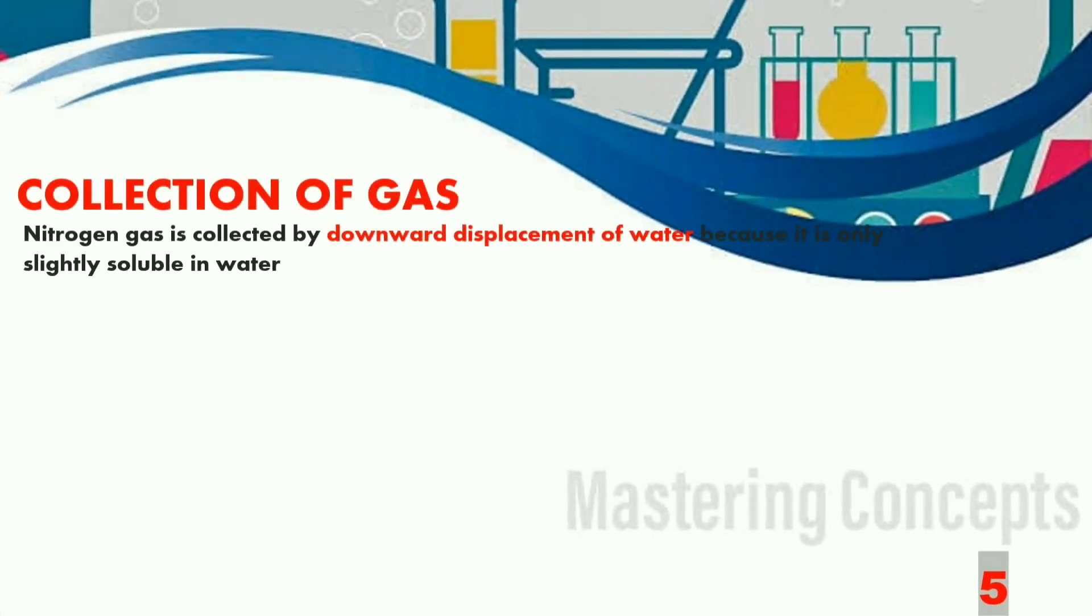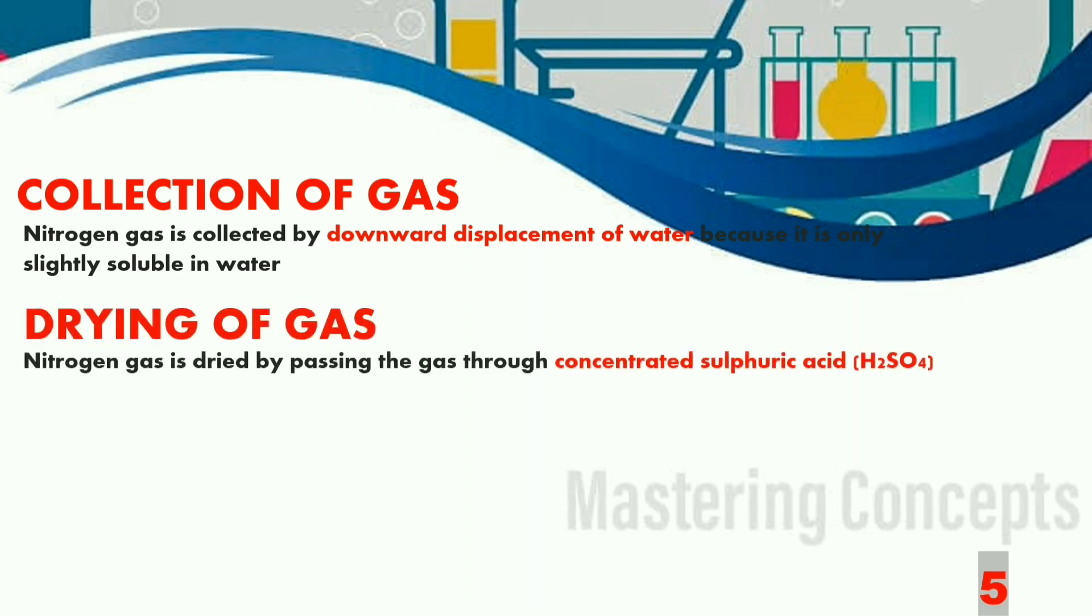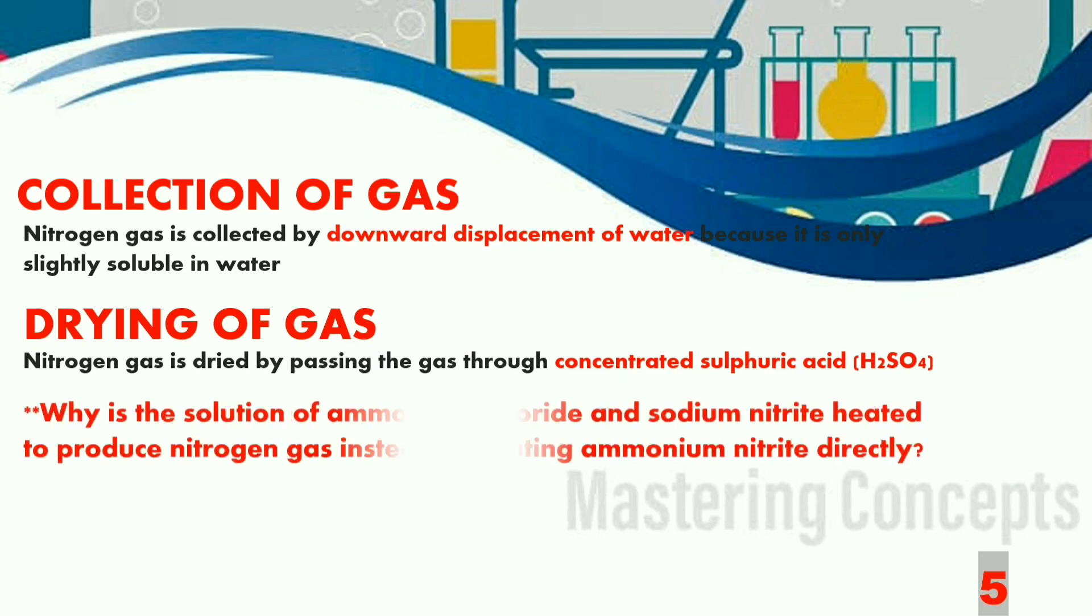Let us now see how the nitrogen gas is collected. Since the gas is slightly soluble in water it is collected by downward displacement of water. Nitrogen gas is dried by passing the gas through concentrated sulfuric acid H2SO4.